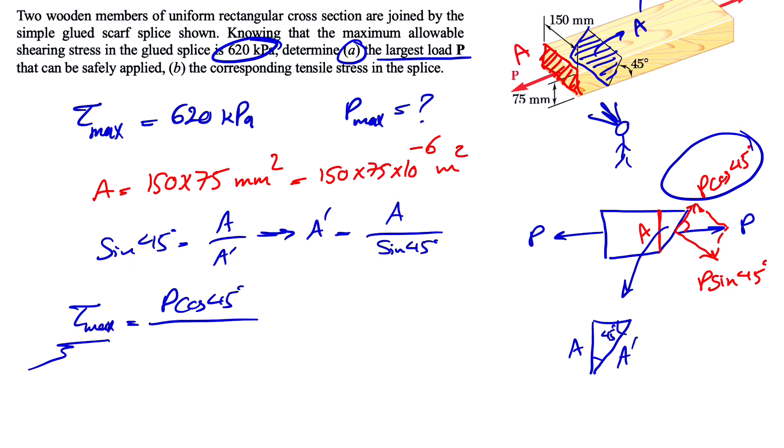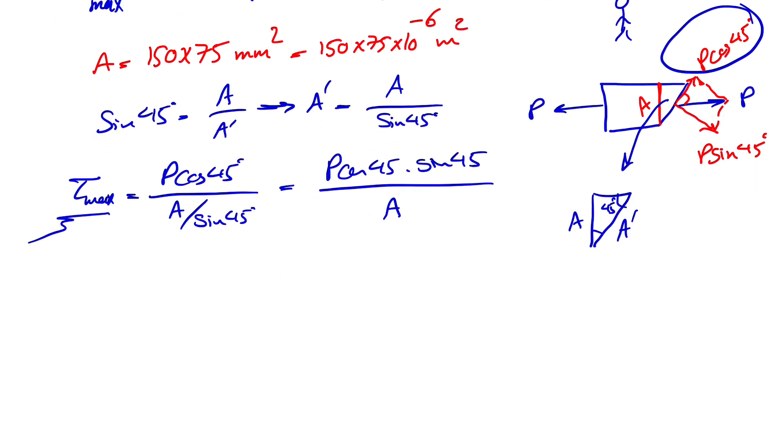And since we have the maximum of the shearing rate, we're going to get the P maximum. And the area, as we discussed, is what we have as A over sine of 45 degrees. So this will be equal to P cosine of 45 degrees times sine of 45 degrees divided by A.